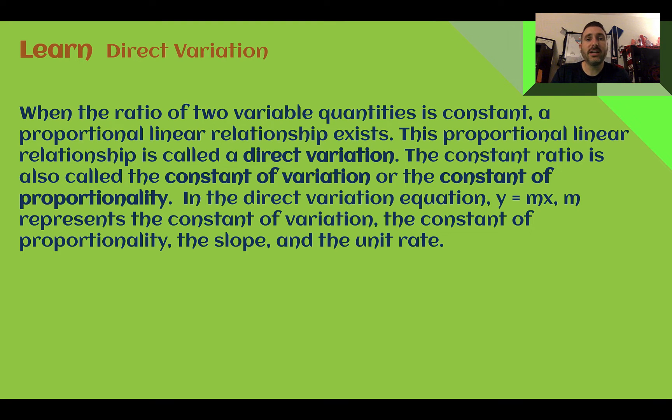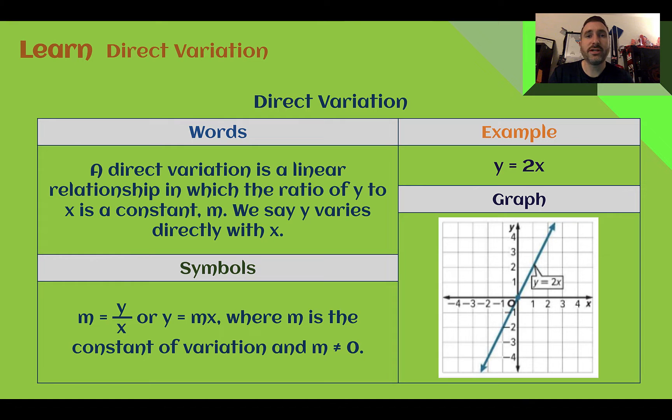The direct variation equation, y equals mx, in that m represents our constant of variation, which is also the slope and the constant of proportionality and the unit rate. So m is what we're going to be focusing on finding here. How is our equation changing between our two variables?